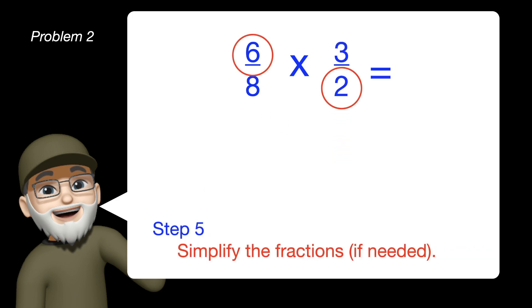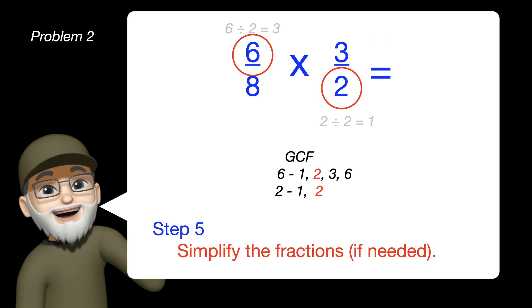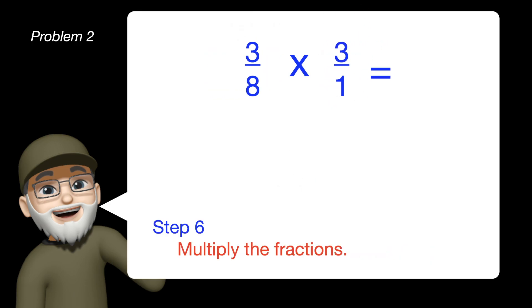Next, we simplify if possible. In this case, we can simplify 6 and 2 because they are divisible by 2. When you divide both of those by 2, we will be able to rewrite our fractions, and now we're ready to multiply. Straight across, numerators, 3 times 3 is 9, and denominators, 8 times 1 is 8.